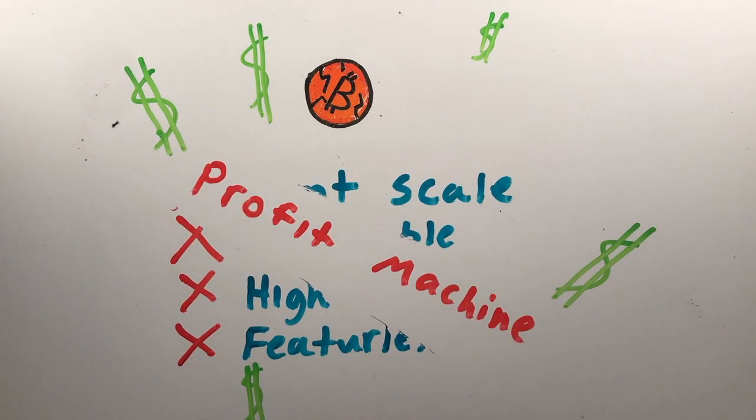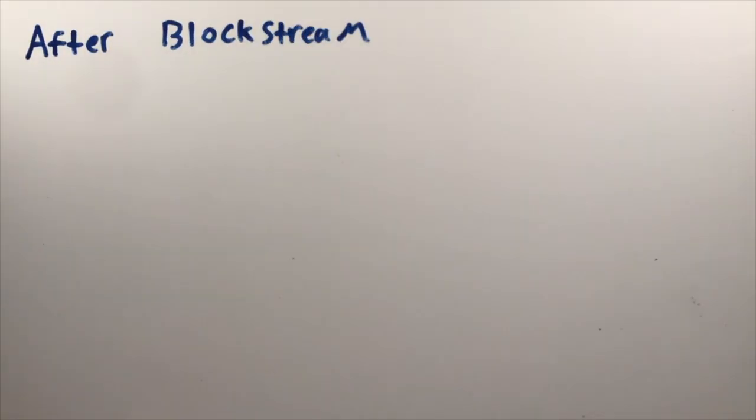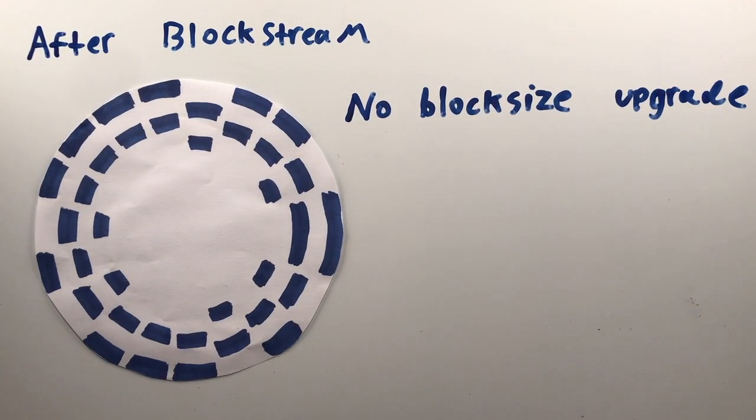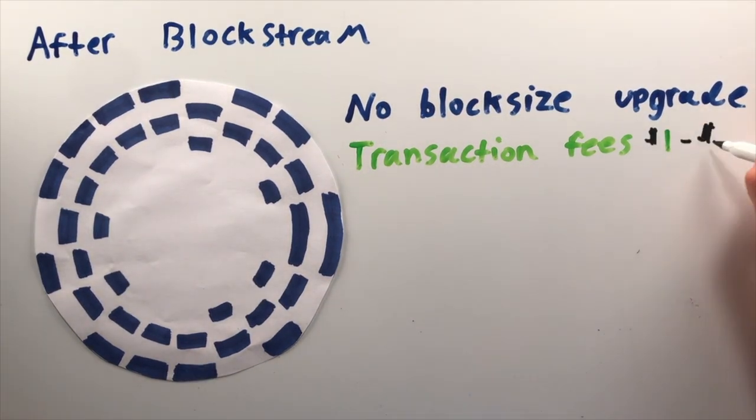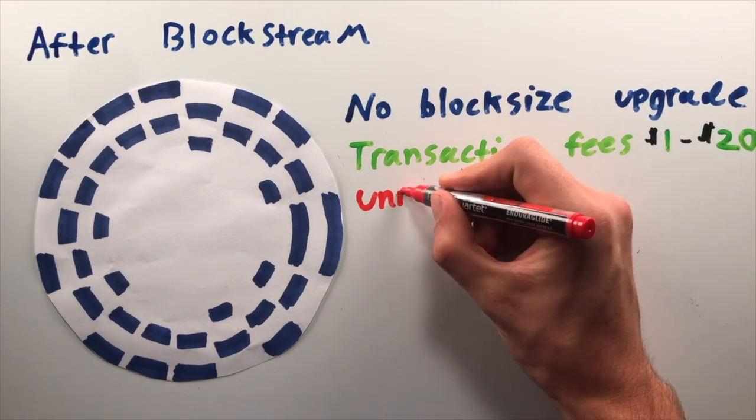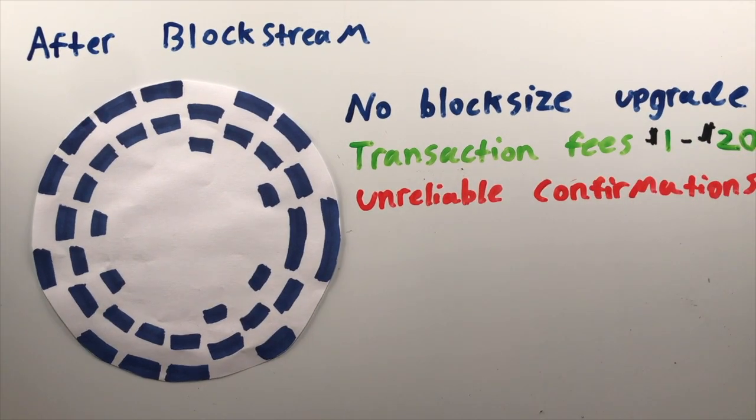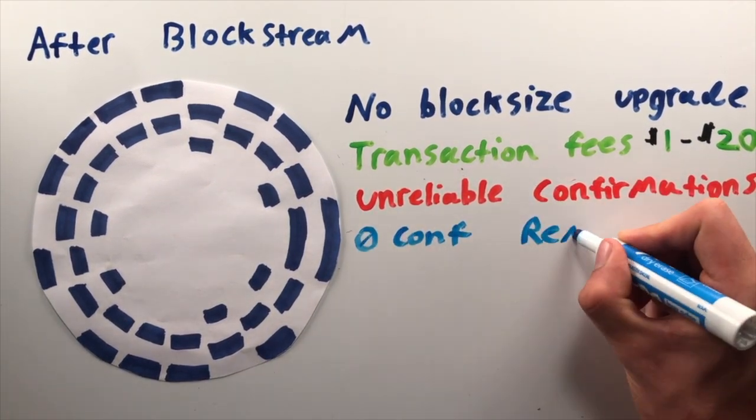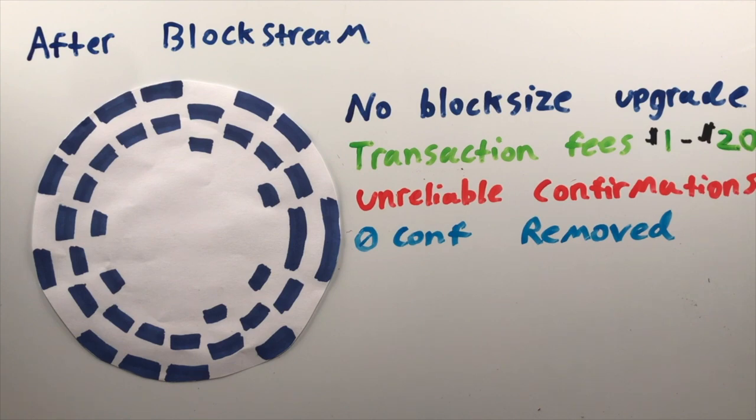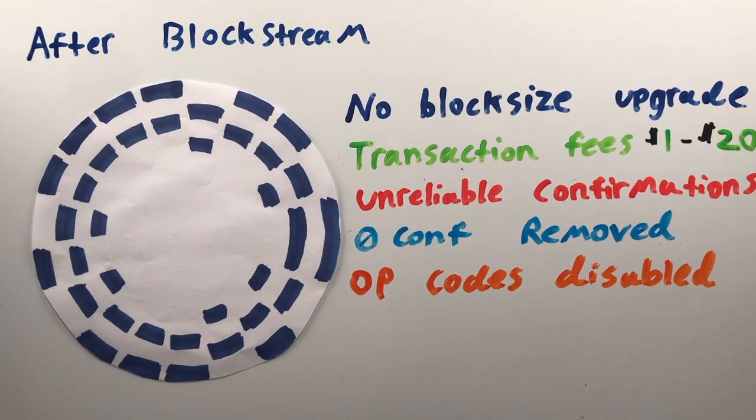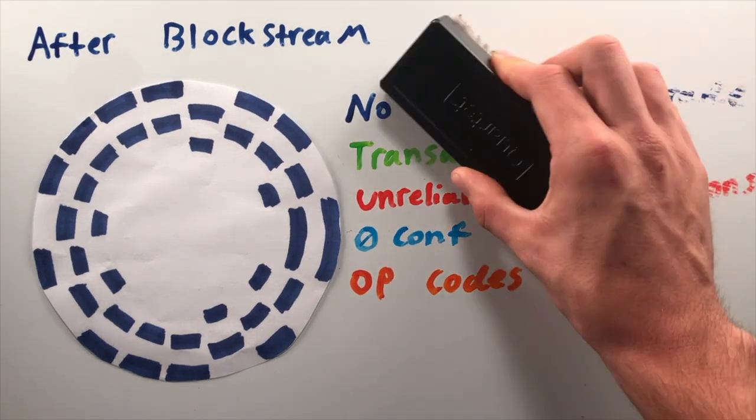And we all know what has happened since 2015. Bitcoin's block size has not been raised. Transaction fees fluctuate wildly. Confirmation times are completely unreliable. Zero confirmation instant transactions were removed. The opcodes allowing smart contracts were also removed. All on-chain progress has been halted, other than compatibility upgrades for the integration of second layers.